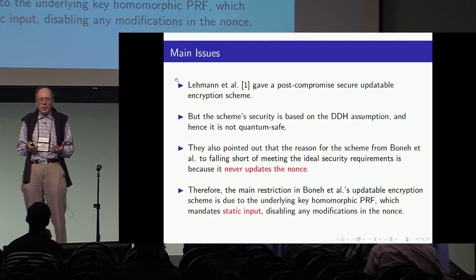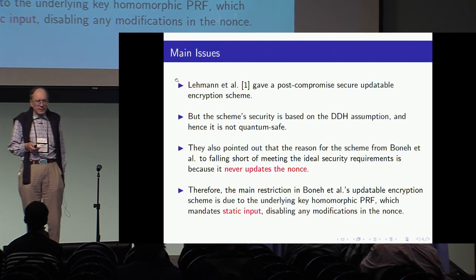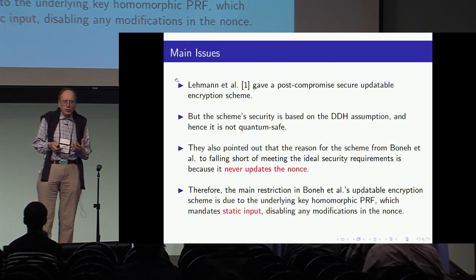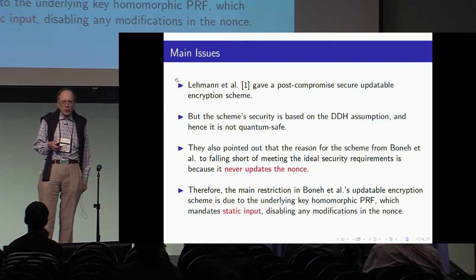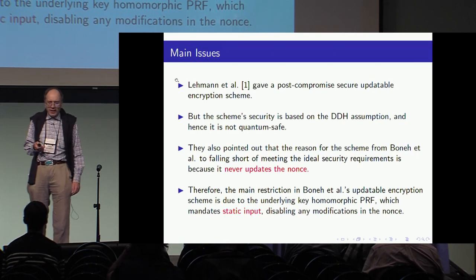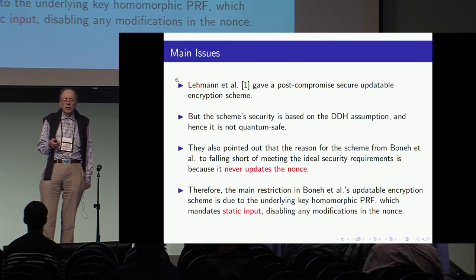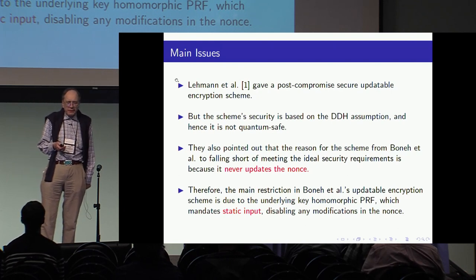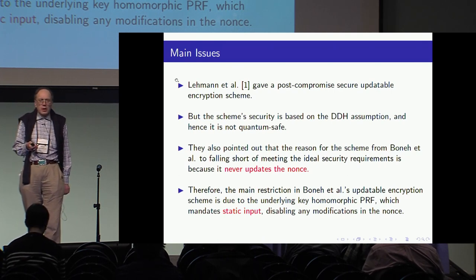Let me explain what the main problems are. What was explained at EuroCrypt 2018 is, first of all, a post-compromised secure updatable encryption scheme was proposed. But the proposal actually assumes the decisional Diffie-Hellman assumption, which we know is not quantum safe. They also pointed out that the reason why there are problems with the Boneh et al. scheme is that it fails short of meeting the ideal security requirements because they never update the nonces.